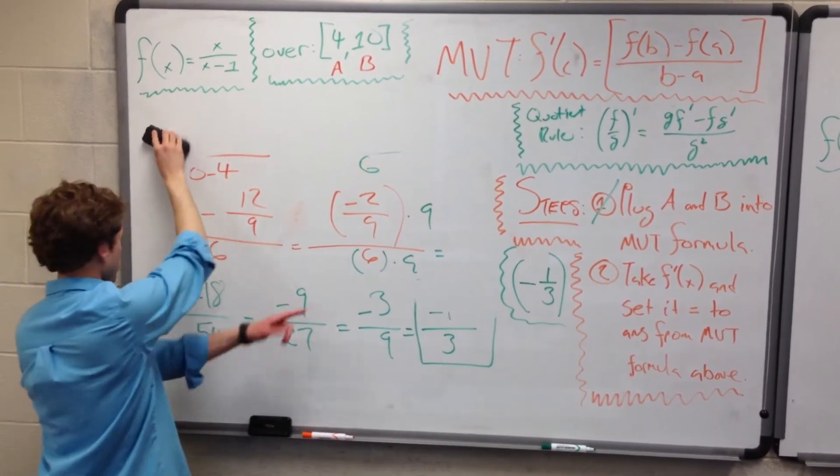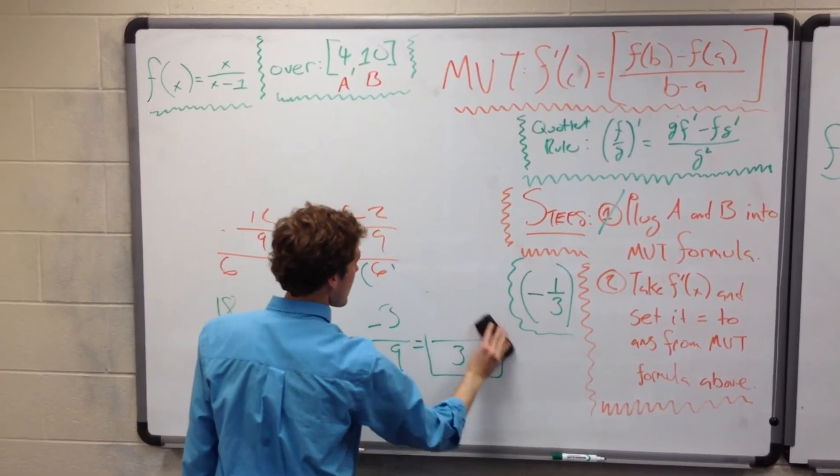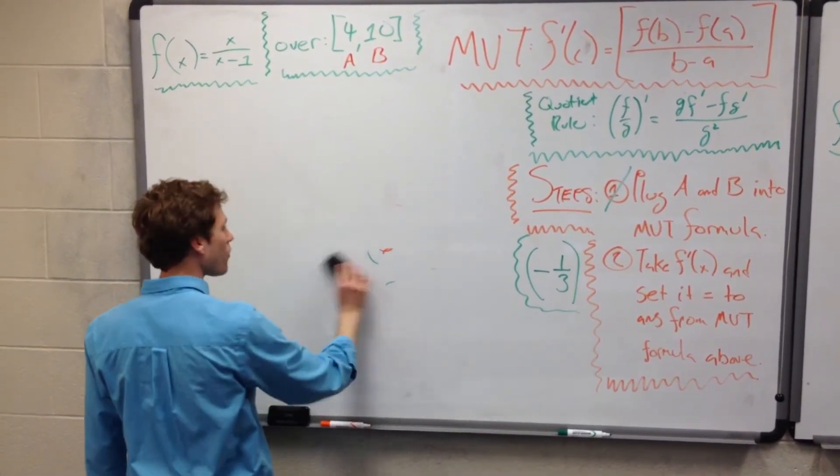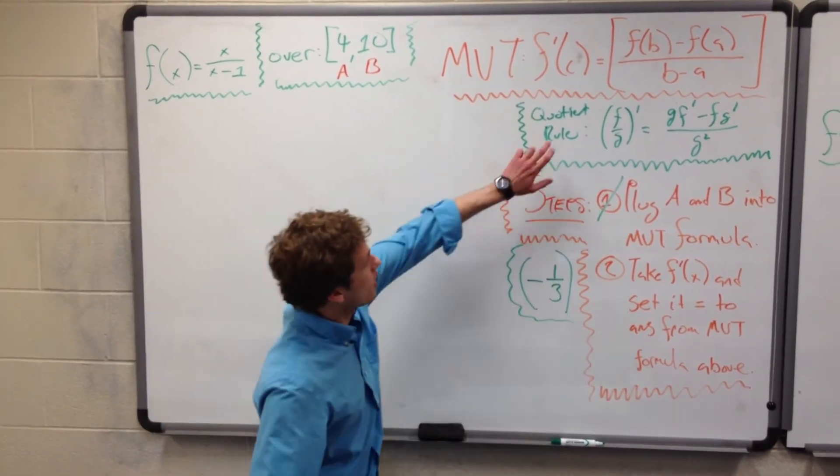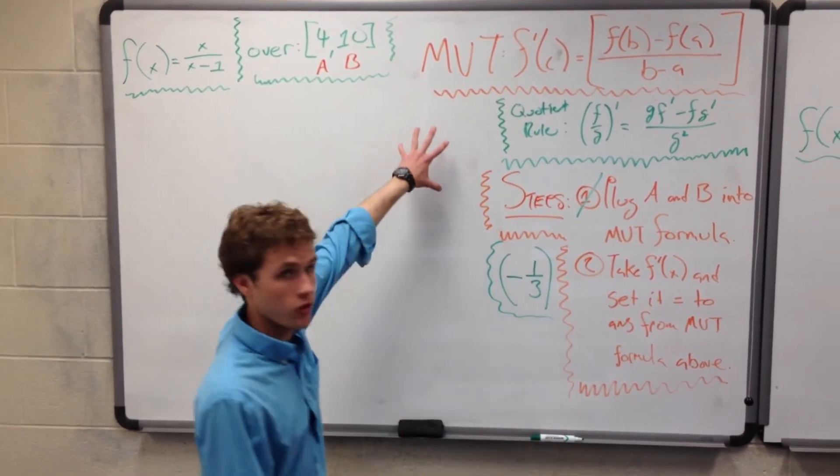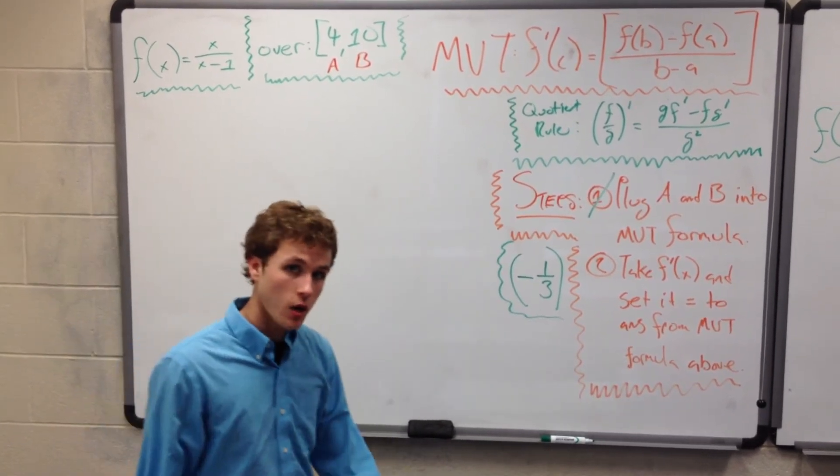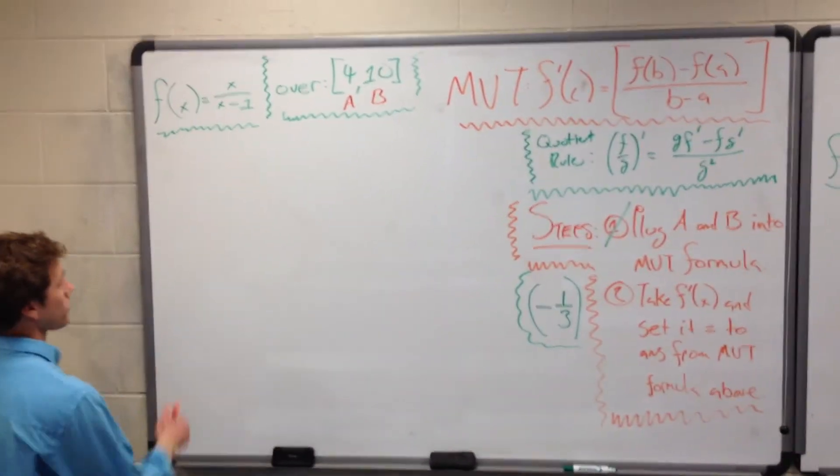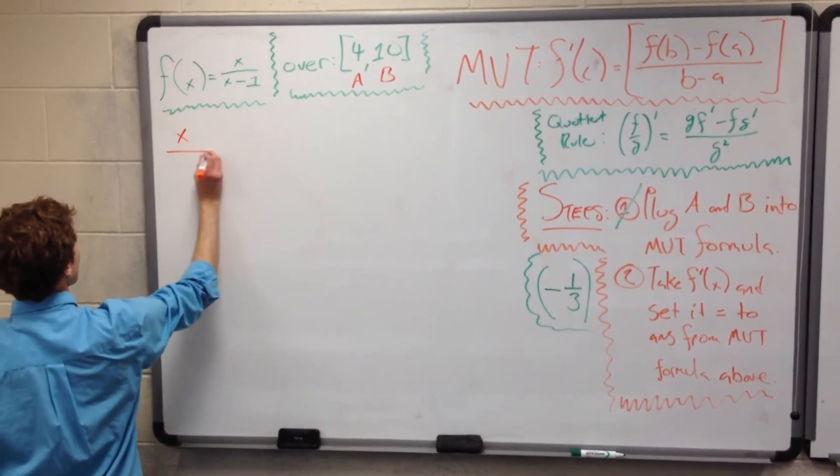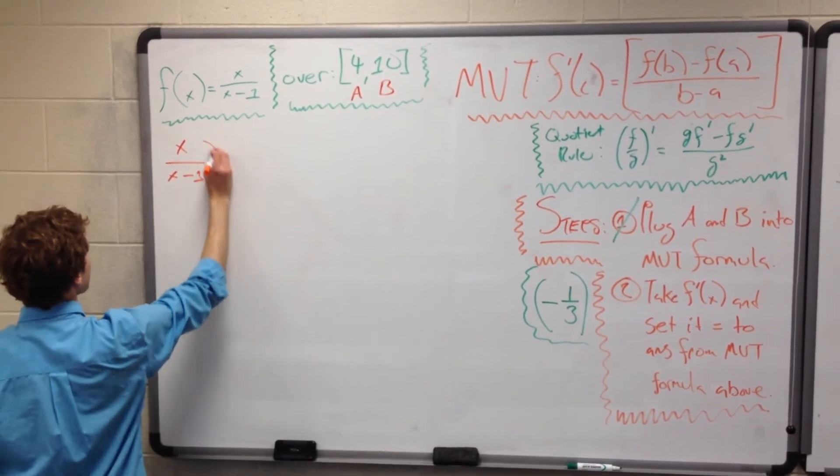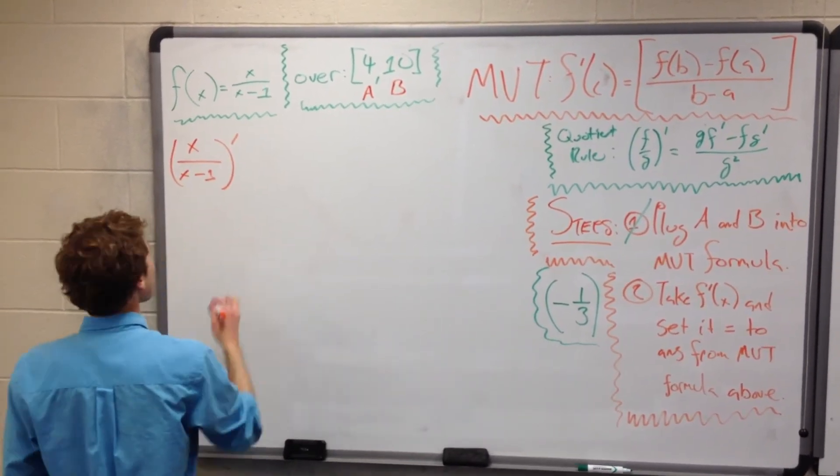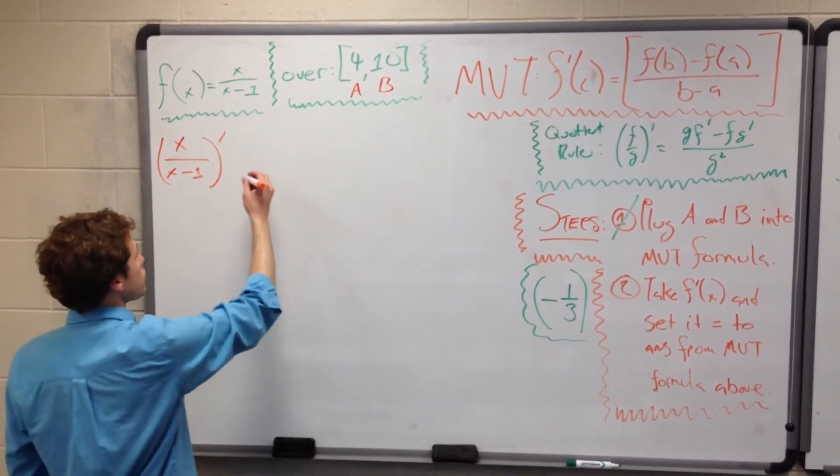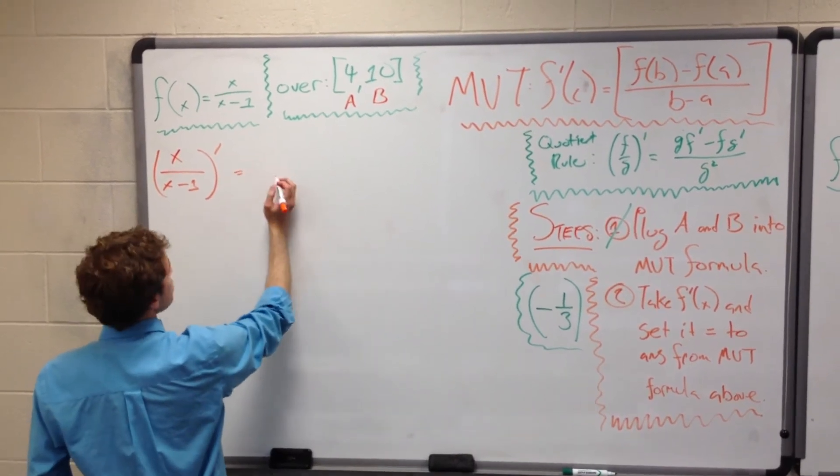The next step is we're going to take F prime, or we're going to take the derivative, the first derivative, of the function that we were supplied. So that's going to require the quotient rule. The quotient rule is not always necessary, but it's necessary for this because we're taking the derivative of a rational function, which by definition is a function that is a quotient. So let's go ahead and take the derivative of this function. We have X over X minus 1 prime. So let's put this into the quotient rule formula, which says that F over G prime is G F prime minus F G prime over G squared.